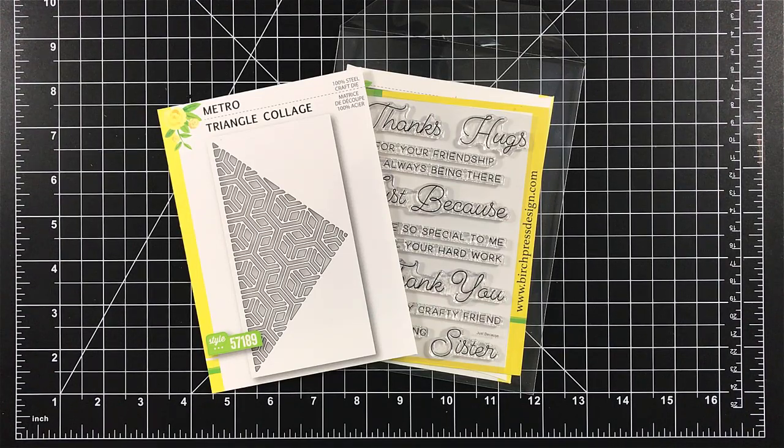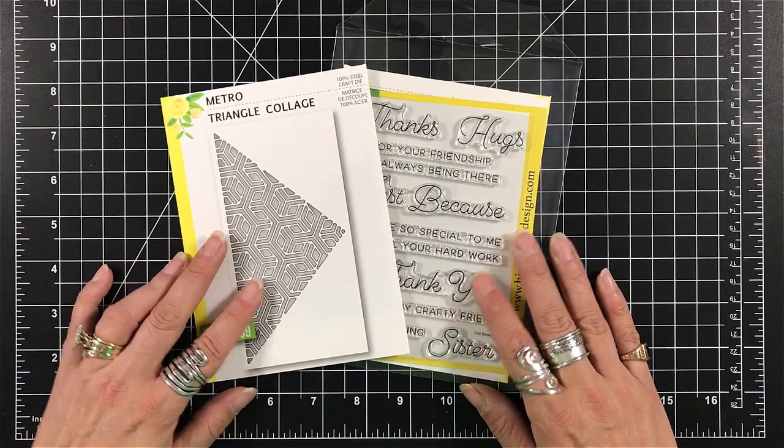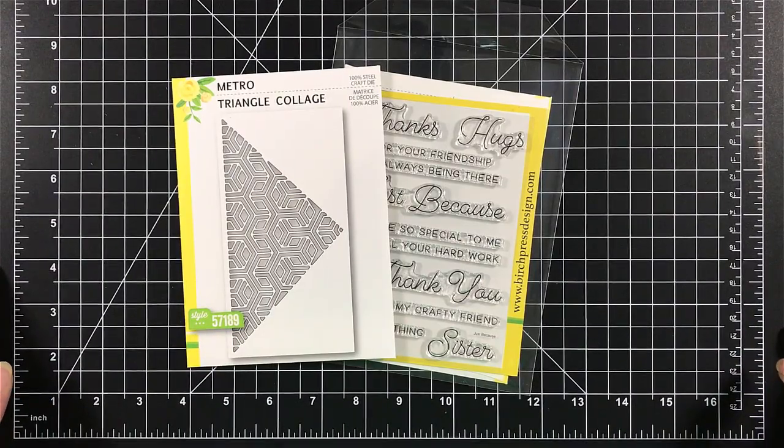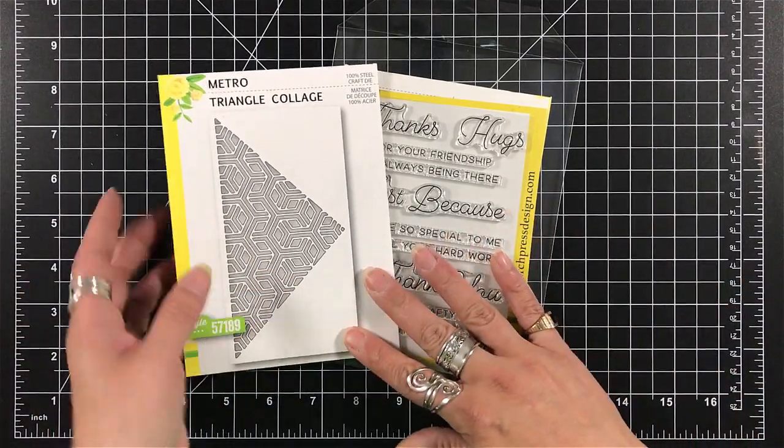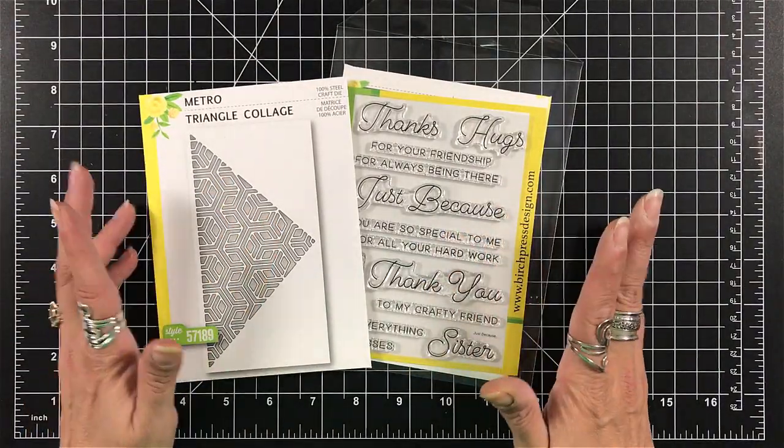Hey everyone, it's Desiree and I am here with some products from Birch Press Designs. I try to say that very slowly because I'll always mess it up. So we are going to work with the Metro Triangle Collage and we are going to work with a pack of their sentiments.